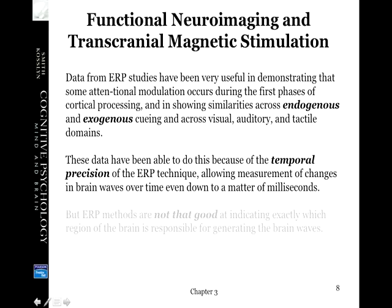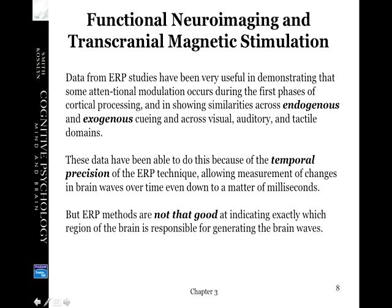We can take these ERP studies and connect them to endogenous and exogenous cues. Endo — remember internal — it's controlled, that's going to be P300. Exogenous cues — external, quick, automatic — that's the P100. The cool thing about ERP research is that it is good at time, it doesn't hurt very much, and it's moderately cheap. I can measure down to just two milliseconds — that's why we have 100 milliseconds and 300 milliseconds.